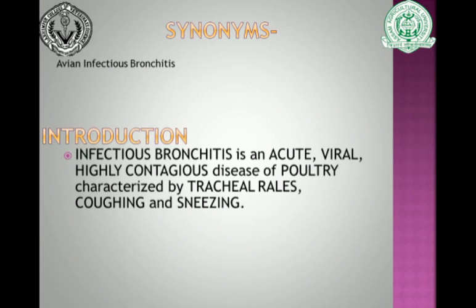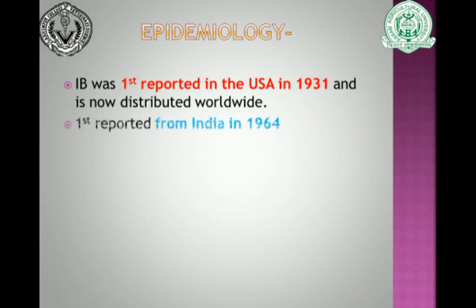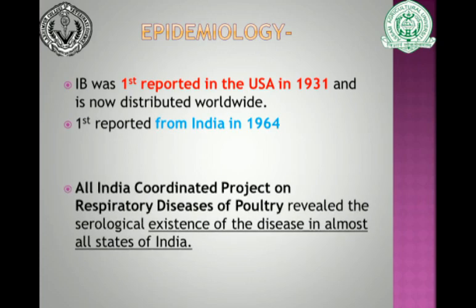Apart from the respiratory tract, it also targets the urogenital tract. Infectious bronchitis was first reported in the United States of America in 1931 and is now distributed worldwide. It was first reported from India in 1964, and the All India Coordinated Project on Respiratory Diseases of Poultry has revealed the disease is present in almost all states of India.